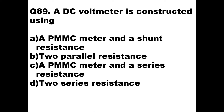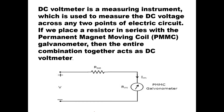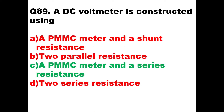Now we will go to question number 89. A DC voltmeter is constructed using what? We can build a DC voltmeter using a PMMC meter. A PMMC meter basically measures DC current. If you put a resistance in series with a PMMC meter, then we can get a basic DC voltmeter. So option C — PMMC meter and a series resistance — will be the right answer. A DC voltmeter is a measuring instrument used to measure DC voltage across any two points of an electric circuit. If we place a resistor in series with the PMMC galvanometer, the entire combination together acts as a DC voltmeter. So option C is the right answer.